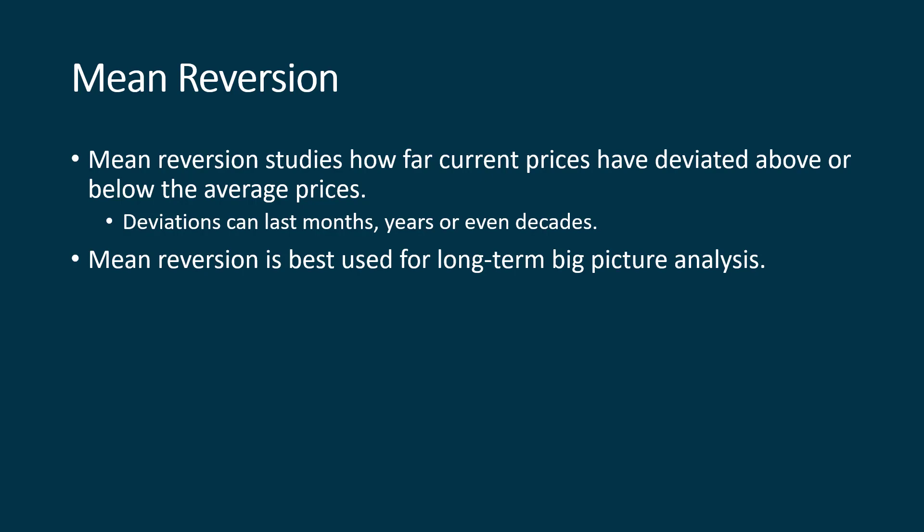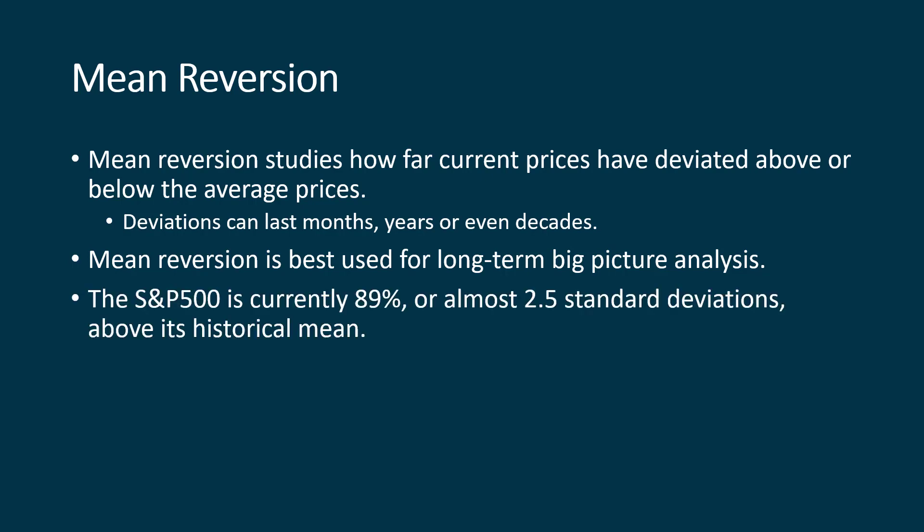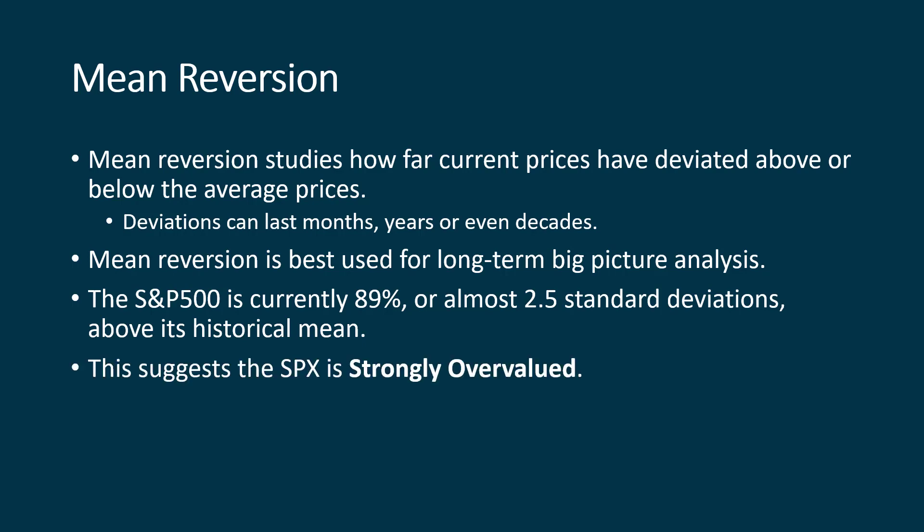Mean reversion is best used for long-term big picture analysis. I usually only look at these charts about once a week, and I report on them in my weekly videos that my members have access to. I will usually not talk about them in my daily videos, though I also bring them up in my monthly videos. Looking at the model we're going to talk about here, the S&P 500 is currently 89% — or almost 2.5 standard deviations — above its historical mean. This suggests that the S&P 500 is strongly overvalued based on this model, but we don't use this model all by itself. There are other models that we also use to reach a consensus.